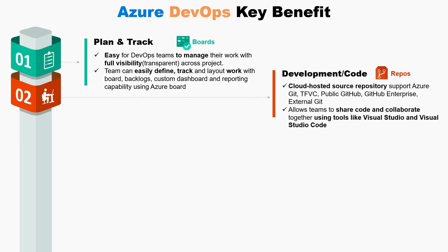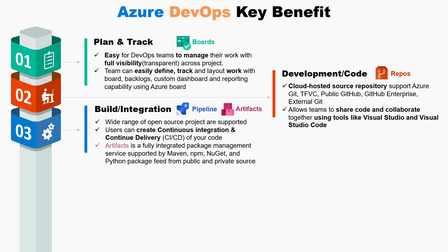Azure Repos is a cloud-based source repository tool to support source control systems like Git, TFVC, and GitHub to manage code, which allows teams to share code and collaborate using various tools like Visual Studio and Visual Studio Code. Azure Pipeline is a cloud-based service used to automatically build and test project code, which supports a wide range of different application languages and project types.